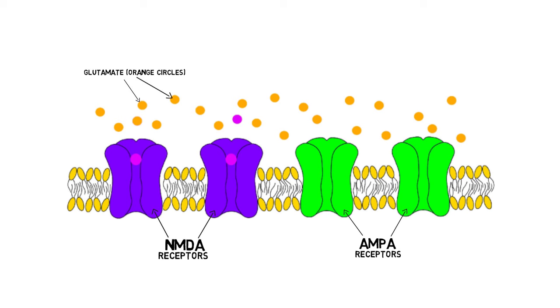NMDA receptors are typically blocked by a magnesium ion, which is only removed if the postsynaptic neuron becomes sufficiently depolarized, as can occur through the activation of the AMPA receptor. When the block is removed, calcium is able to flow into the neuron, causing further depolarization.